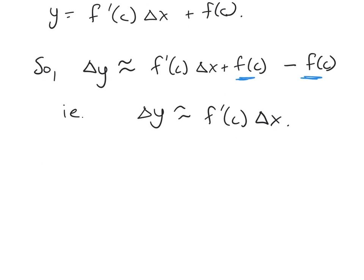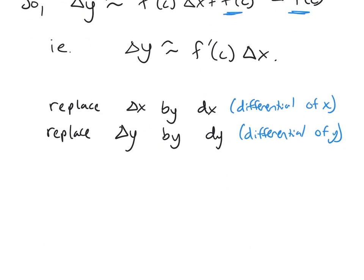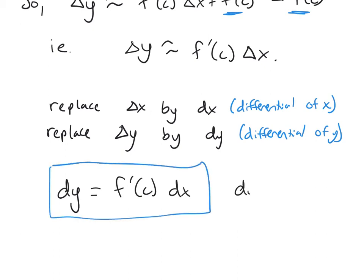So what we're going to do now is we're going to replace delta x by dx, which is called the differential of x, and we're going to replace delta y by dy, and that's called the differential of y. So we get this equation now, dy is equal to f prime of c dx. And this is our differential.